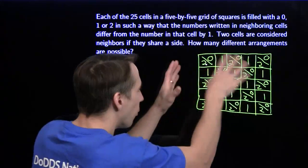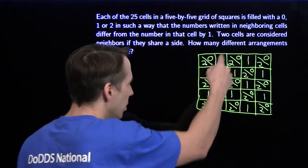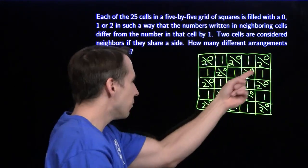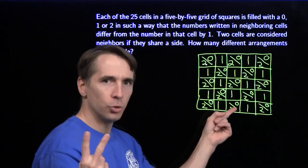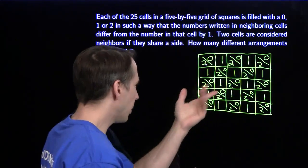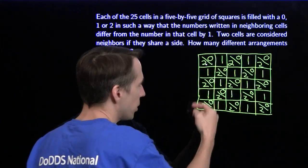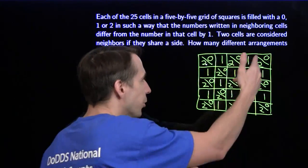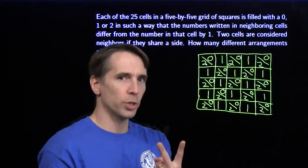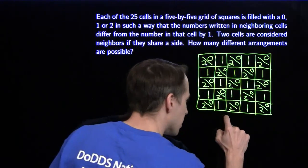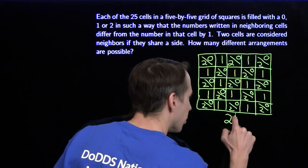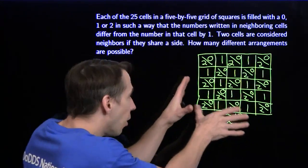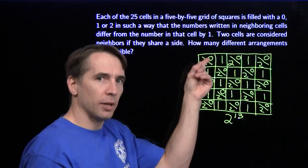So now we can count the number of ways we can build this. The diagonals with the ones — we know exactly what they'll be. Along the other diagonals, for each cell we have two choices. We count up how many cells we have here: one plus three is four, plus five is nine, plus three is twelve, plus one is thirteen. So I have thirteen cells where I have two choices — two choices thirteen times. That means I have two to the thirteenth ways to build a grid like this, covering all grids where I start with a zero or two in the upper left-hand corner.